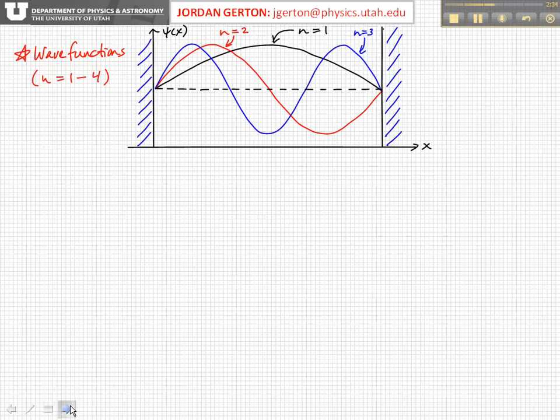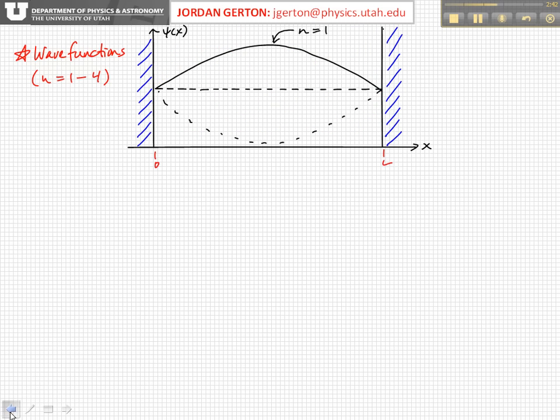For n equals three, we get that, and for n equals four, we get that. So you notice that for n equals one, we have one single antinode. An antinode is those parts of the wave which actually vary in time, and two nodes at the end.